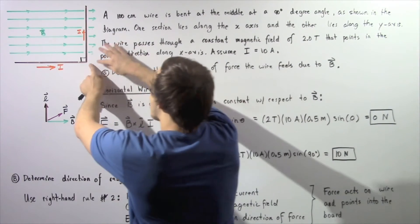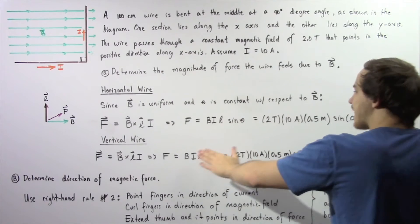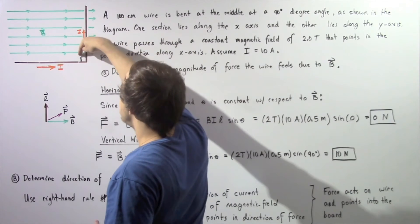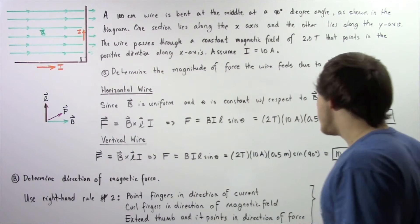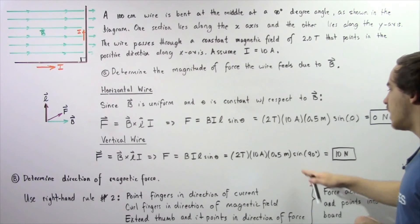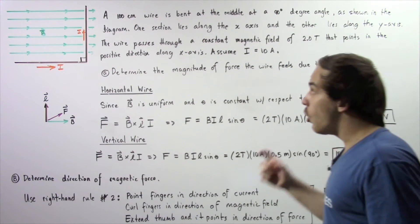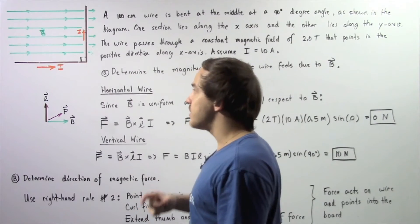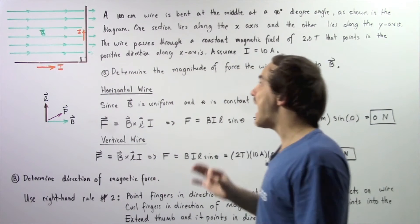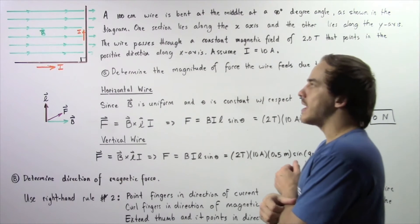Now moving on to the vertical wire: we apply the same equation, but now with an angle of 90 degrees. So we have two Teslas multiplied by 10 amps multiplied by 0.5 meters multiplied by sine of 90 degrees, which gives us 10 Newtons. The only section of the wire that actually feels a force is the vertical section, with a magnitude of 10 Newtons.